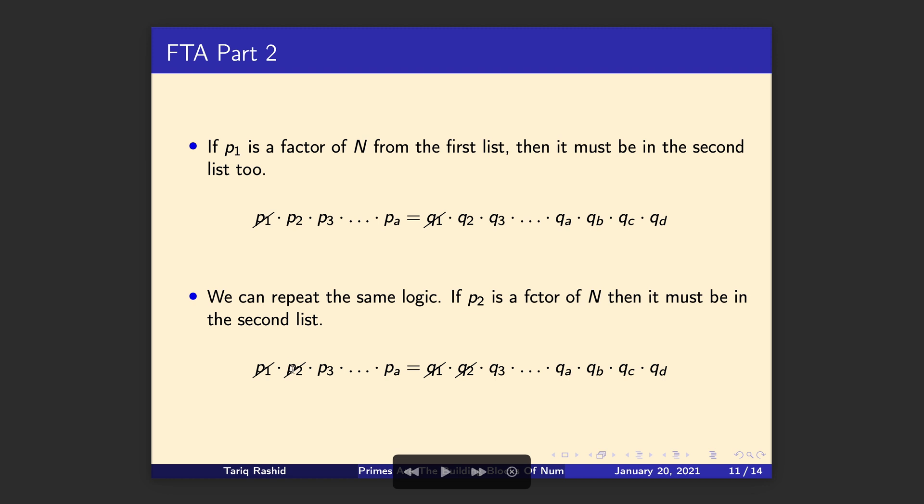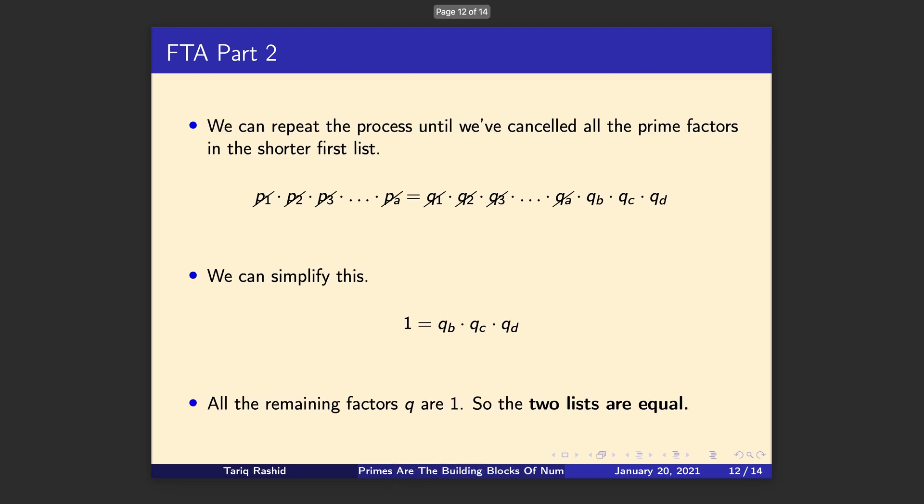Now we can repeat this because we've crossed off p₁. We can now think about the second prime factor, which could be five, could be seven, could be something else. If it's a factor of N, then it must also be a factor in the second list. So we can cross off another factor from that second list. So we can keep repeating this until all the factors in the first list have been matched up, crossed off, matched up to factors in the second list. Now because that second list is longer than the first one, there are some left over that we haven't been able to match. We haven't been able to account for them.